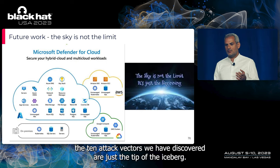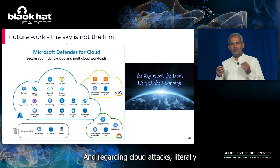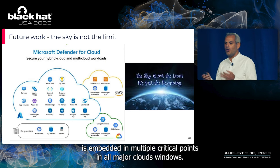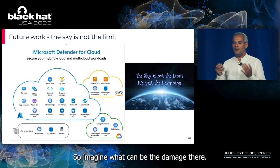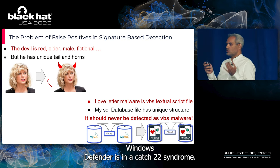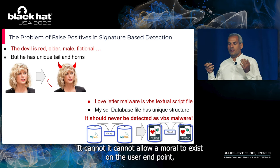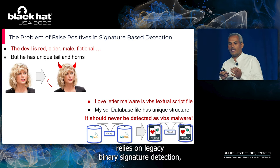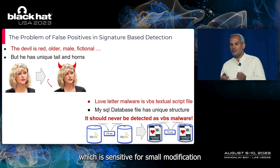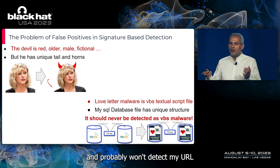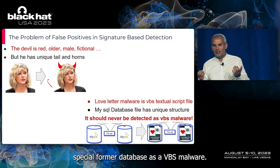Regarding cloud attacks, literally the sky is not the limit since Defender is embedded in multiple critical points in all major cloud vendors — imagine the potential damage there. The vulnerability root cause: Windows Defender is in a catch-22 syndrome. It cannot allow malware to exist on a user endpoint, but this behavior can be used against it. The reason for the false positive is that it relies on legacy binary signature detection, which is sensitive to small modifications, instead of machine learning algorithms that consider multiple features and would likely not detect a MySQL database as a VBS malware.